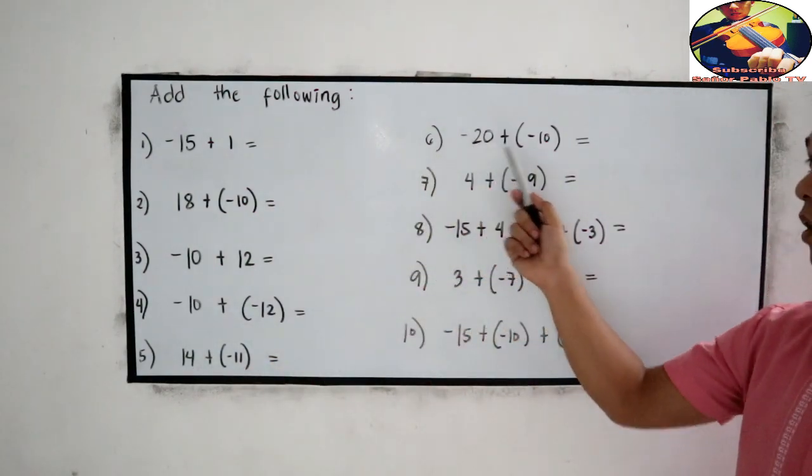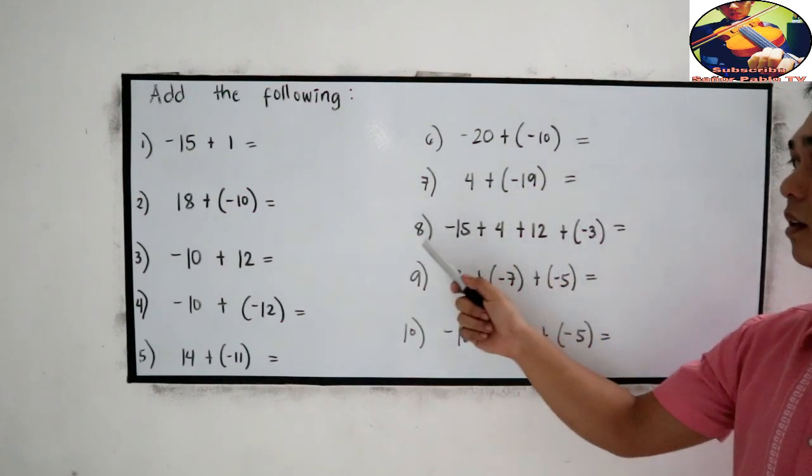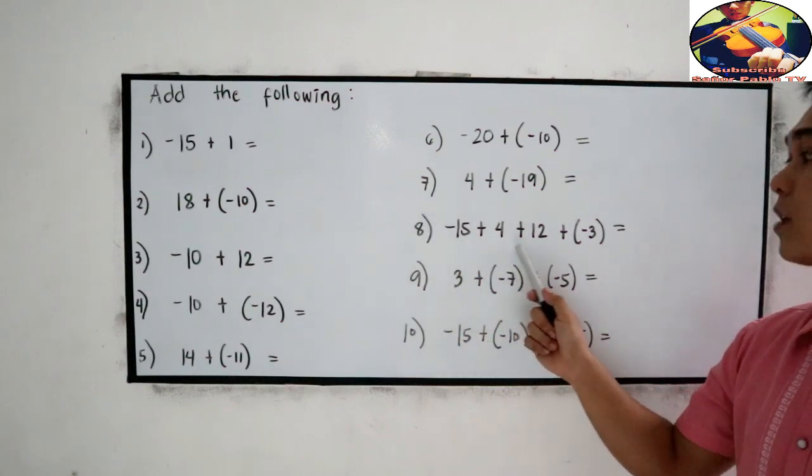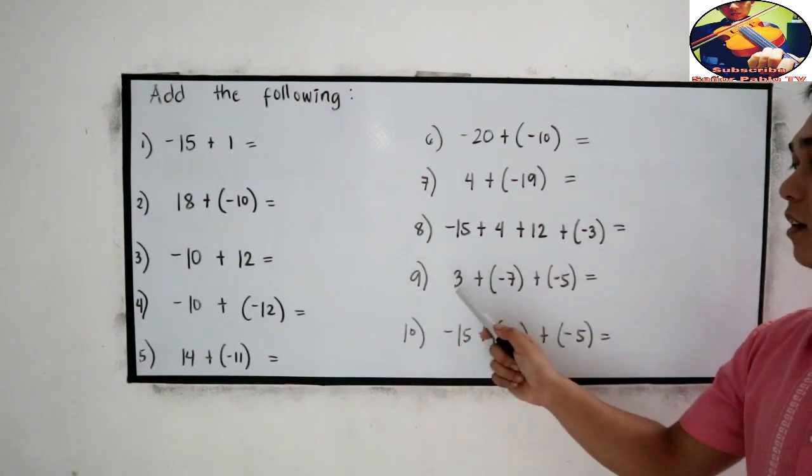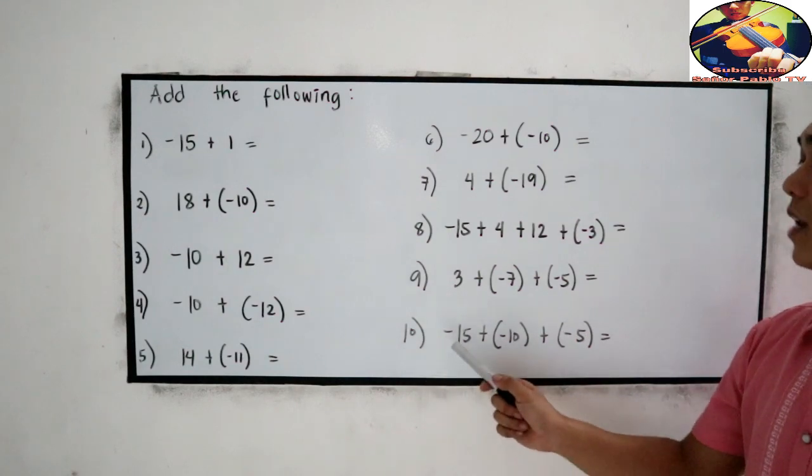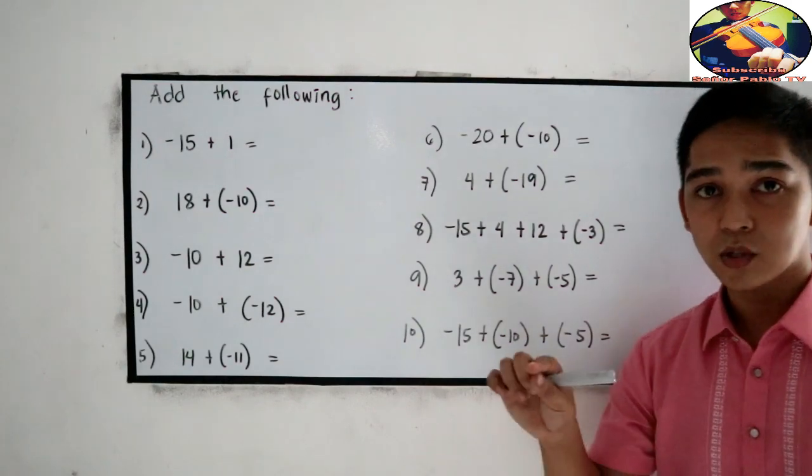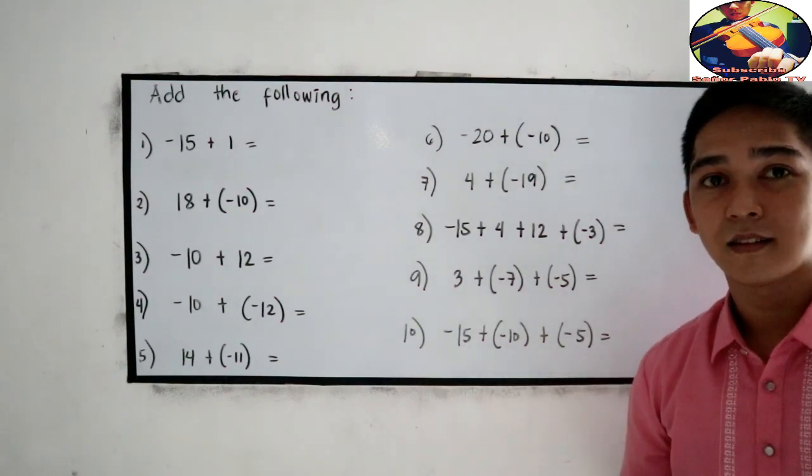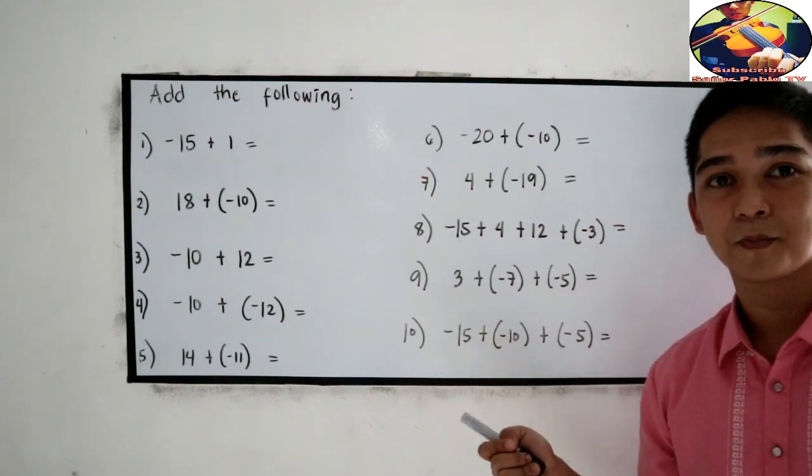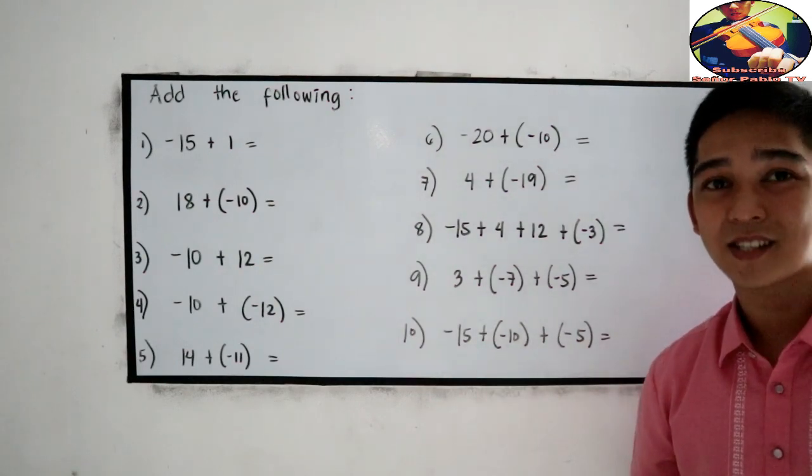Number 6: negative 20 plus negative 10. Number 7: 4 plus negative 19. Number 8: negative 15 plus 4 plus 12 plus negative 3. Number 9: 3 plus negative 7 plus negative 5. Number 10: negative 15 plus negative 10 plus negative 5. You can pause for a while then answer the following problems. Then after answering, play the video and let's check your work.